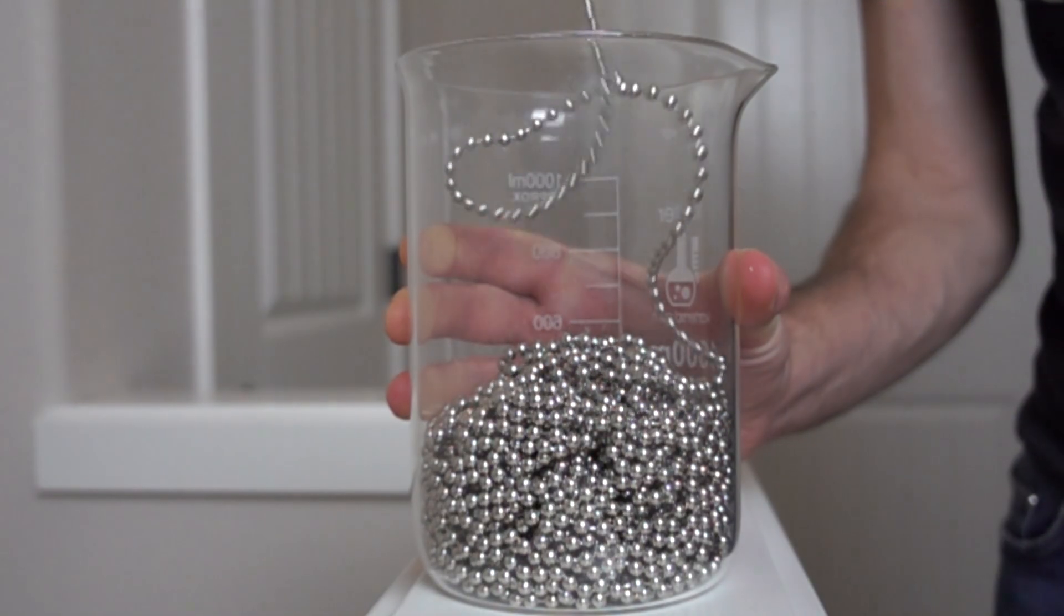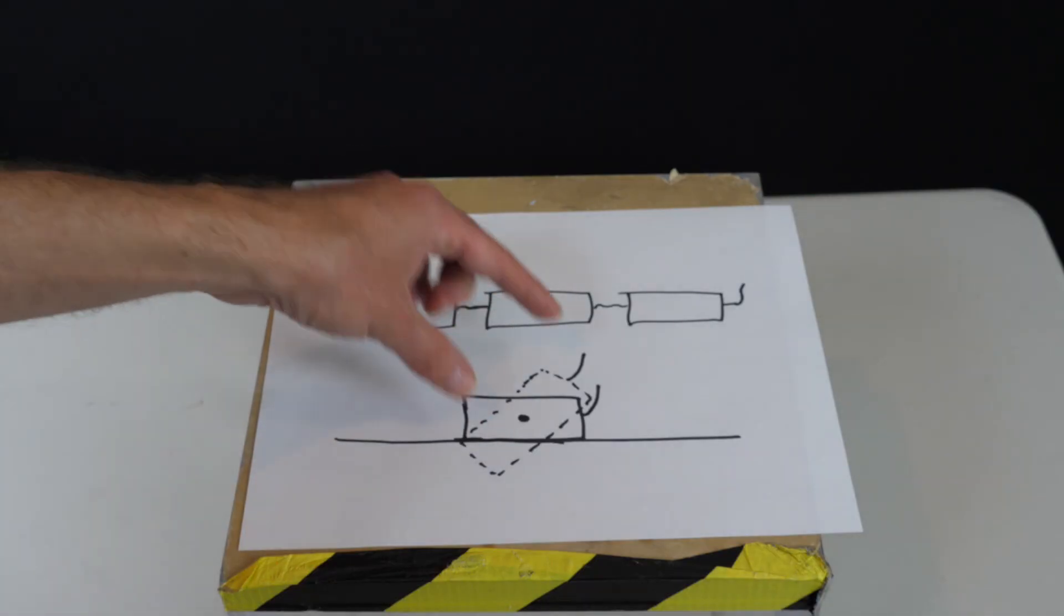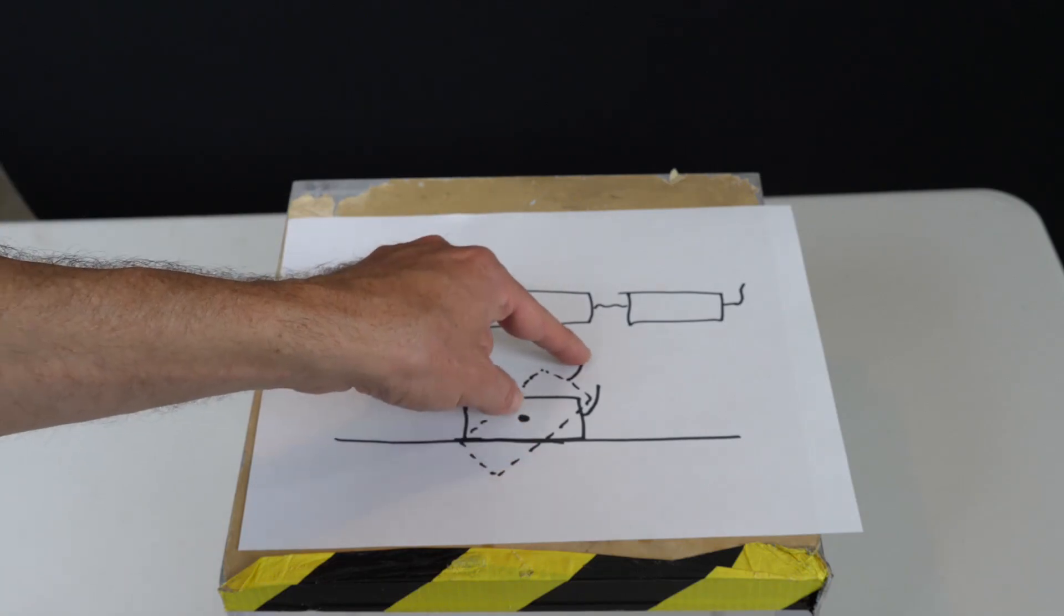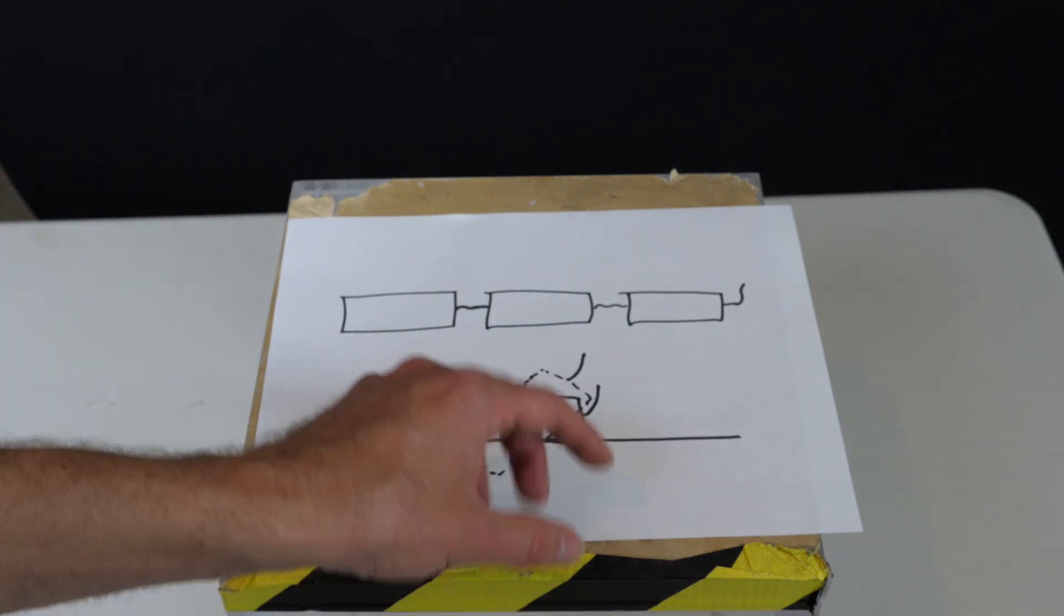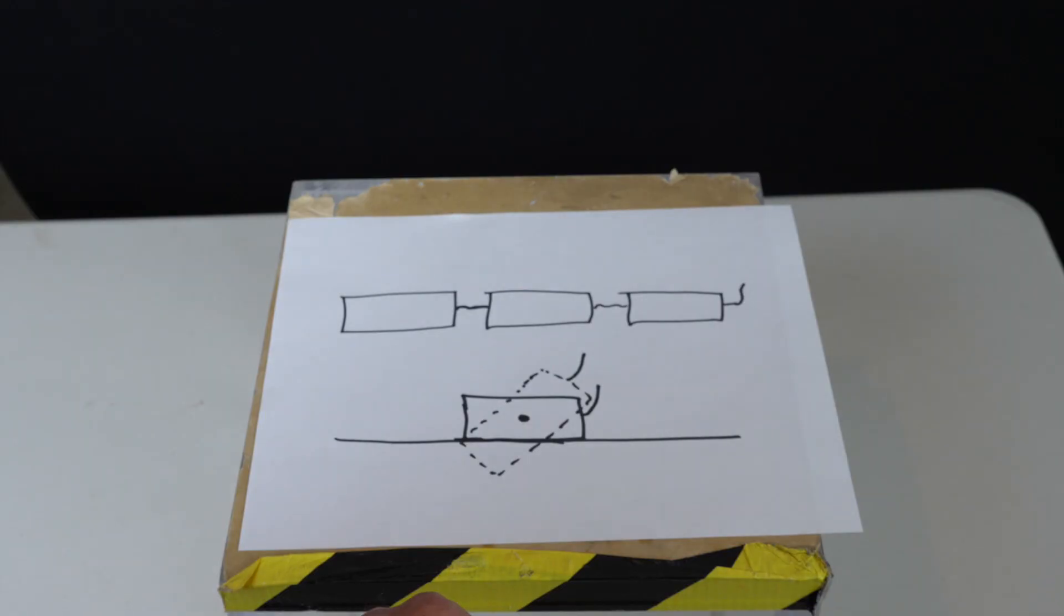So when they hit the ground, this edge would hit first and it would yank the chain above it faster and so it would pull down the chain faster than it would if it were just falling free fall.